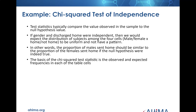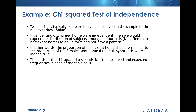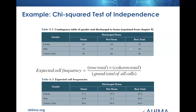The basis of the chi-squared statistic is the observed and expected frequency in each of the four table cells — home, not home, male, female. The expected cell frequency is the row total times the column total, divided by the grand total of all cells. We can see that in table 6.3 of this slide and also in your text.